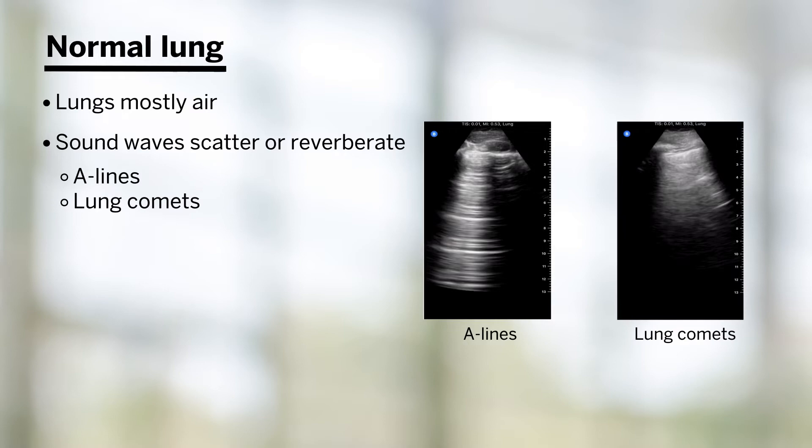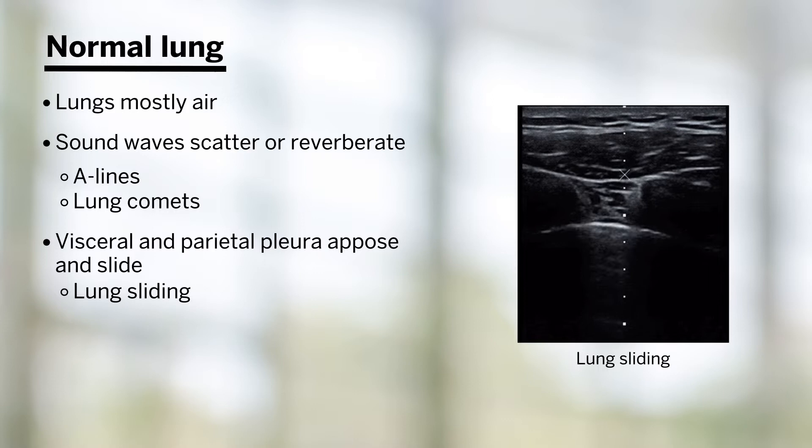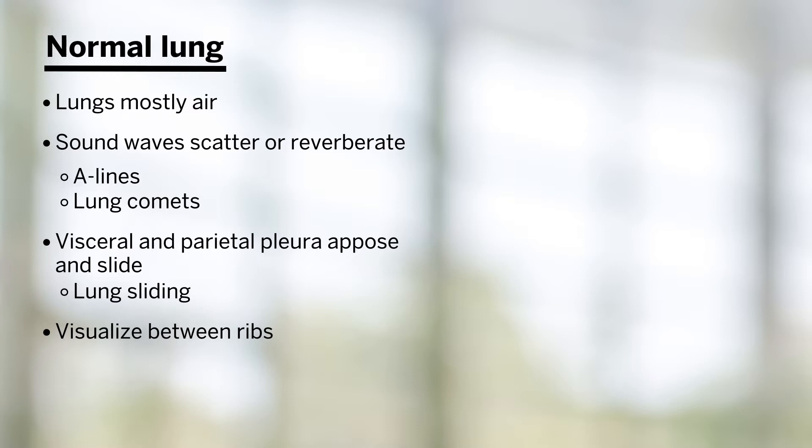Normal lung has visceral and parietal pleura that appose and slide upon each other, and this creates the sonographic finding of lung sliding. In general, we try to visualize it between rib spaces, since these dark, dense, and calcific structures often don't let sound through them.